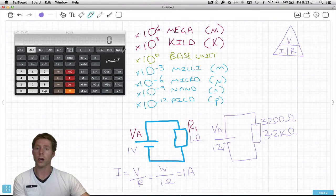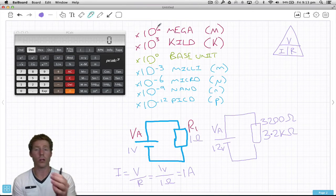The next one up is times 10 to the 6, which gives you a million, and we call that mega.